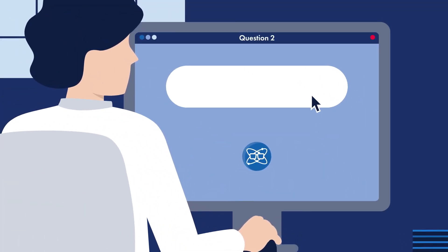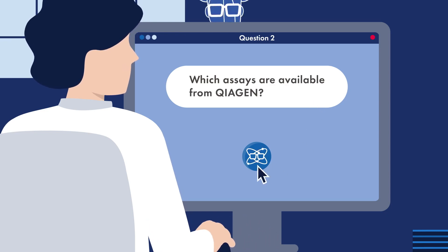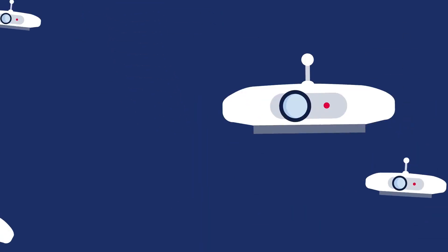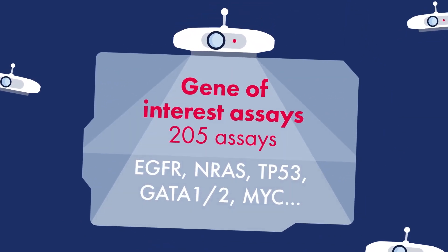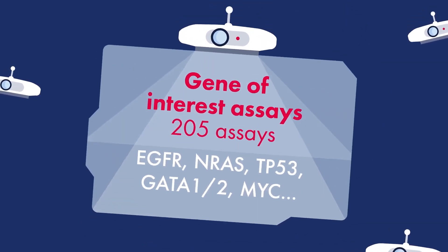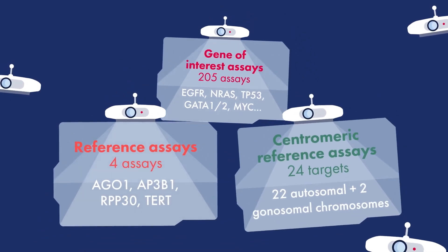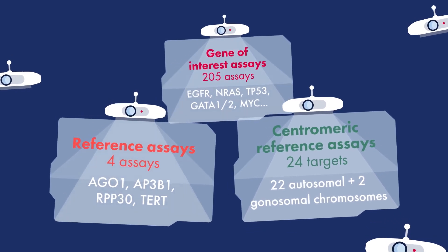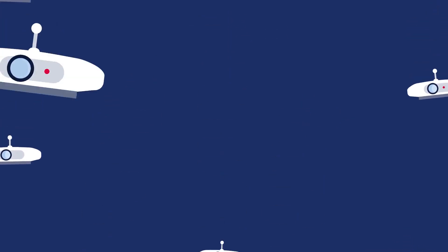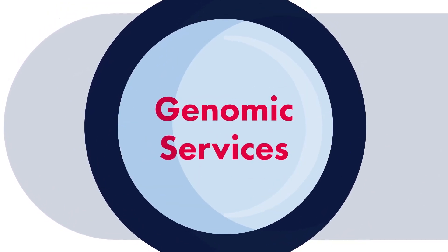Question 2: Which assays are available from Kiagin? More than 200 dPCR wet lab validated assays are offered by Kiagin. Furthermore, customer specific designs are possible for targets and sequences for which validated assays are unavailable, thanks to the expert custom assay design service for dPCR from Kiagin Genomic Services.